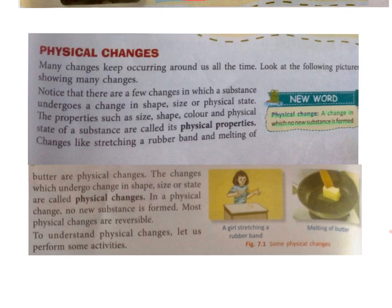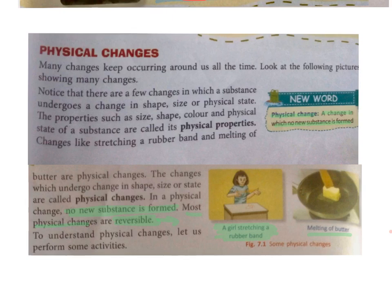We conclude that changes which undergo change in shape, size, or state are called physical changes. In a physical change, no new substance is formed — this is a very important characteristic. Most physical changes are reversible, meaning you can reverse the change and get the original product back. A girl stretching a rubber band and melting of butter are both examples of physical change.